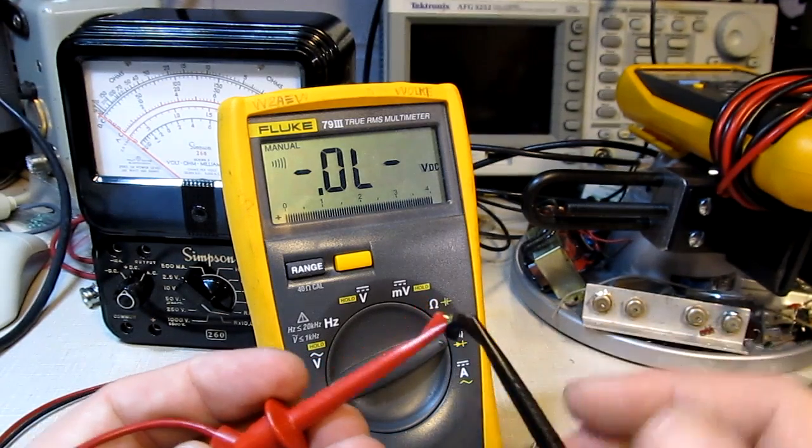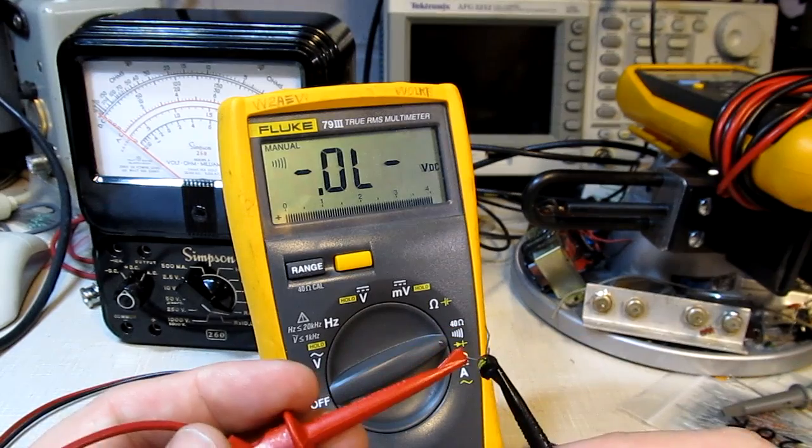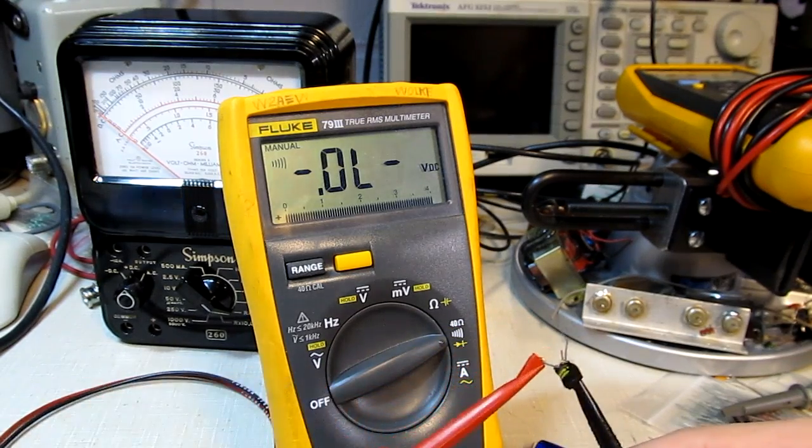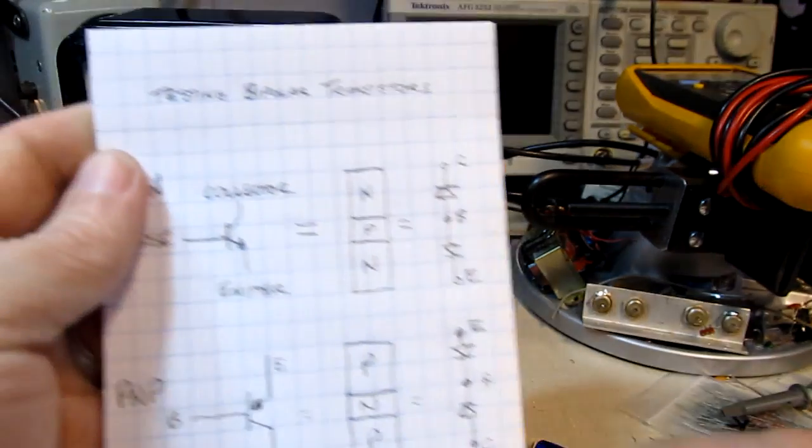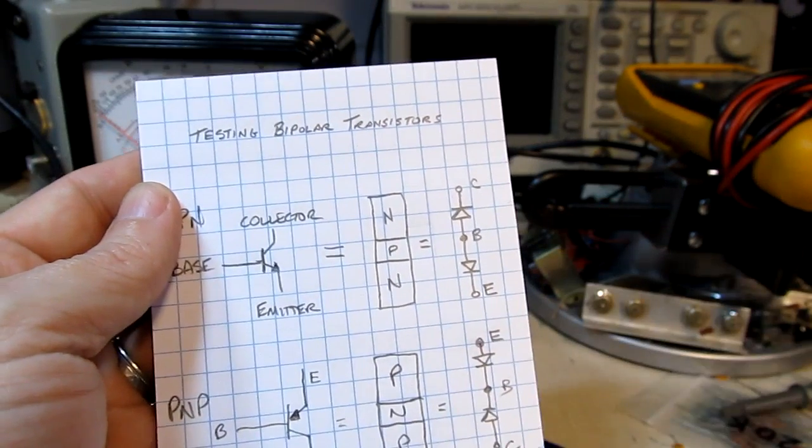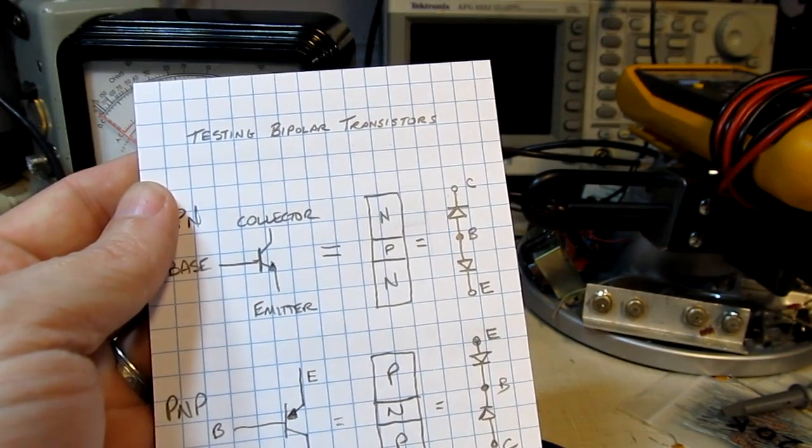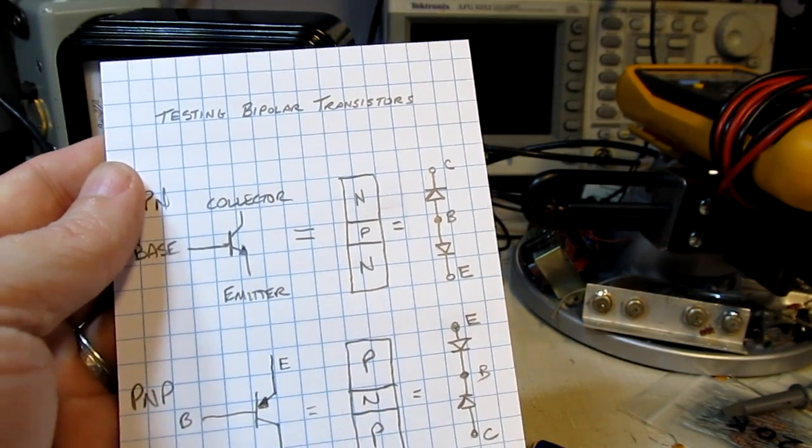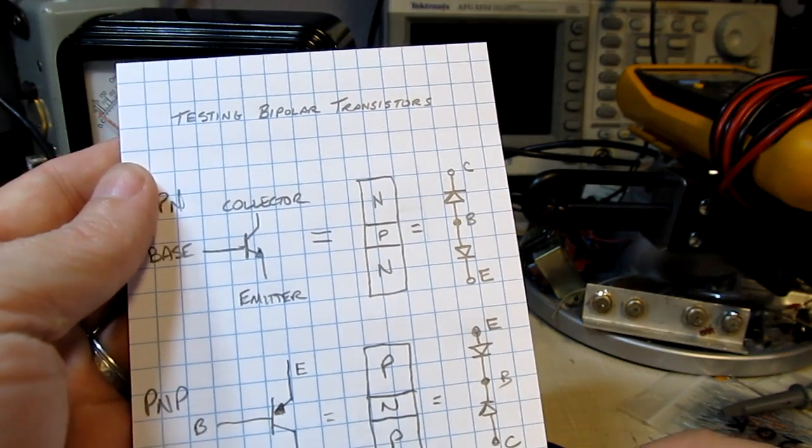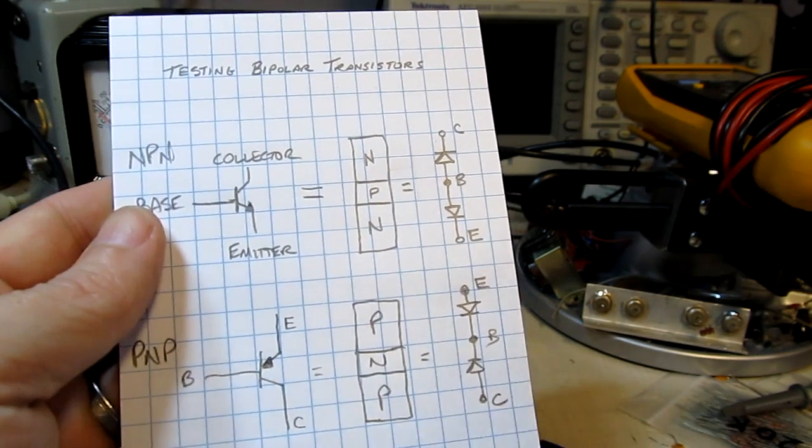So using your digital multimeter in the diode test function you can very easily test again each of those junctions in the PNP or NPN to be sure that it works. Now of course there are other ways to test bipolar transistors too so let's take a look at that.